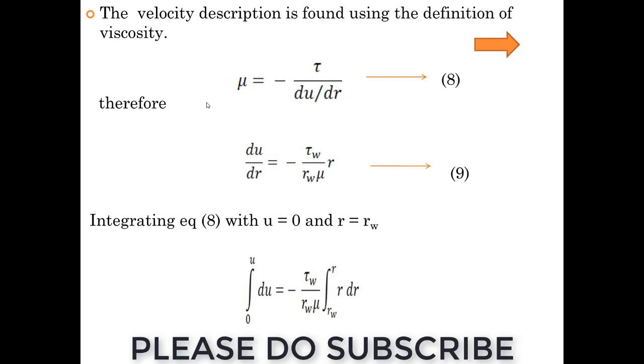As you are considering from wall, it is minus. I am substituting du by dr equals minus tau W by rho W mu times R. If u equals zero and R equals Rw, we are getting this value.